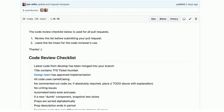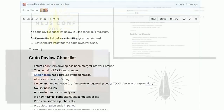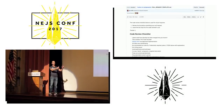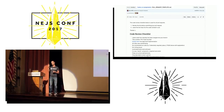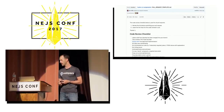That way all of our pull requests have our code review checklist right there inside automatically. That's us embracing the Checklist Manifesto so that we make sure we don't skip a step. However, you're a developer, so an even better idea than a written checklist is to automate it.